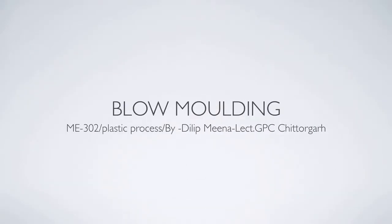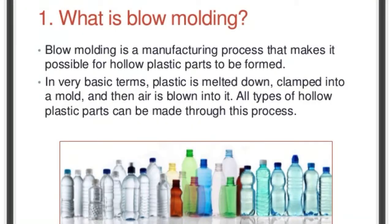Hello students, today we learn about blow molding, which comes under unit 5 of subject code 302. Let's begin. Blow molding is a manufacturing process that makes it possible for hollow plastic parts to be formed.